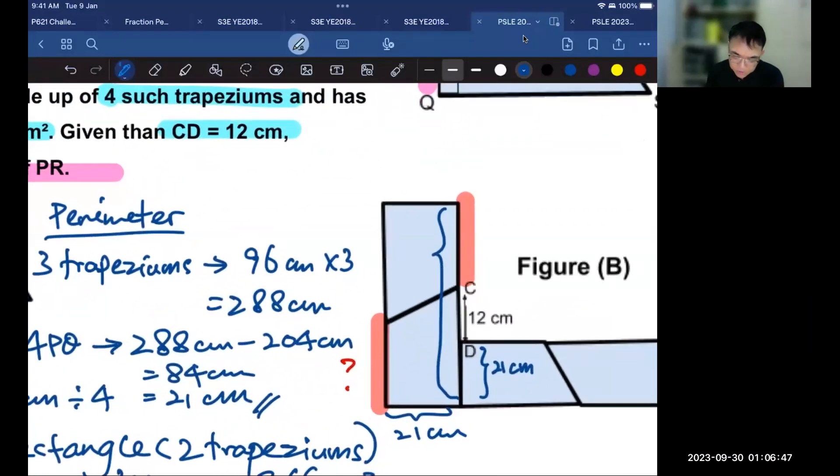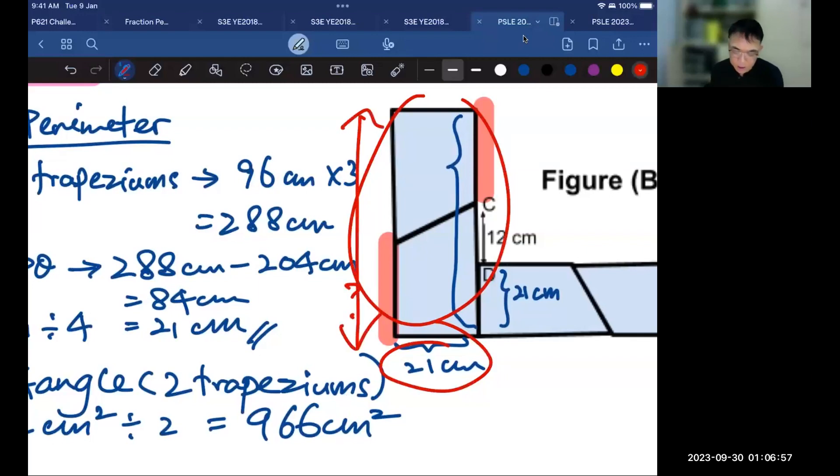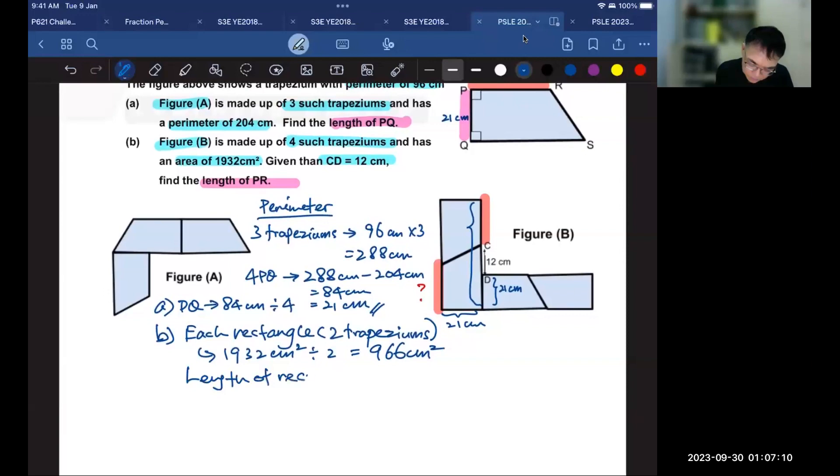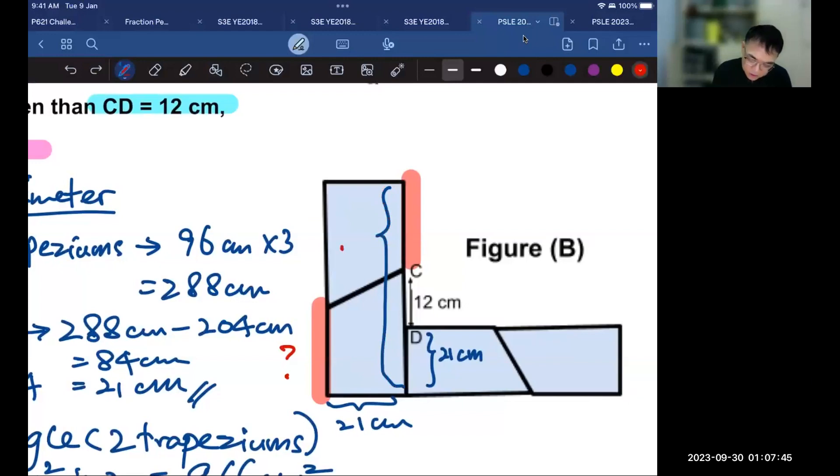So if the area of this rectangle is 966, and the breadth is 21, I can now find the length. The length of the rectangle would be 966 divided by 21, area divided by breadth. So if I take 966 divided by 21, I should get 46 centimeters. So 46 centimeters would be this length.